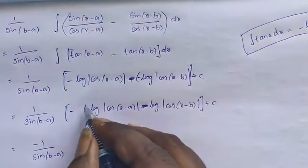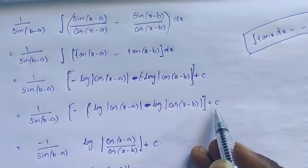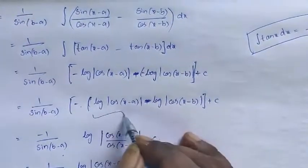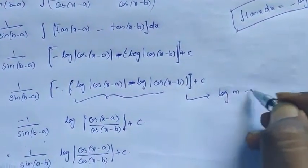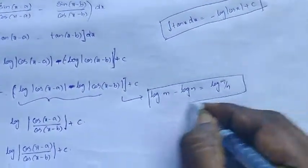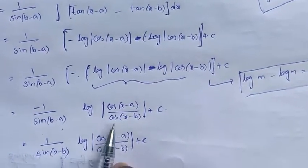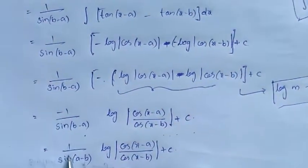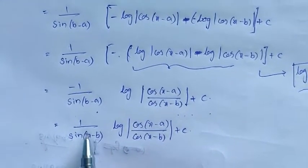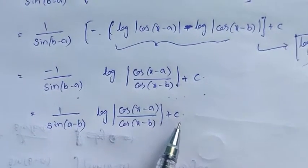Taking minus common from all this, it becomes log|cos(x minus a)| minus log|cos(x minus b)| plus constant, multiplied by minus 1 by sin(b minus a). This is looking like log m minus log n, which equals log(m/n). We can write it as log of |cos(x minus a) / cos(x minus b)| plus constant. Now, the minus in the sin function goes inside, so sin(b minus a) is converted to sin(a minus b). So the final answer is 1 by sin(a minus b) into log of |cos(x minus a) / cos(x minus b)| plus constant.